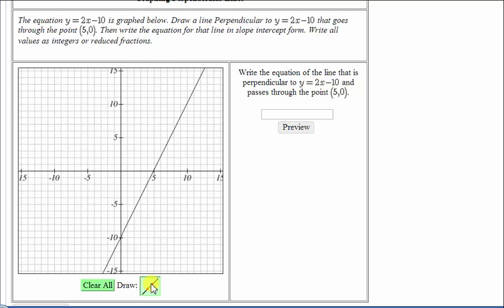So we'll select the line tool, then click on the given point (5,0), which is here on the horizontal axis, and now we want to select a second point so the two lines are perpendicular. We can play around here and see if we can determine where the second point would have to be in order to form two perpendicular lines.